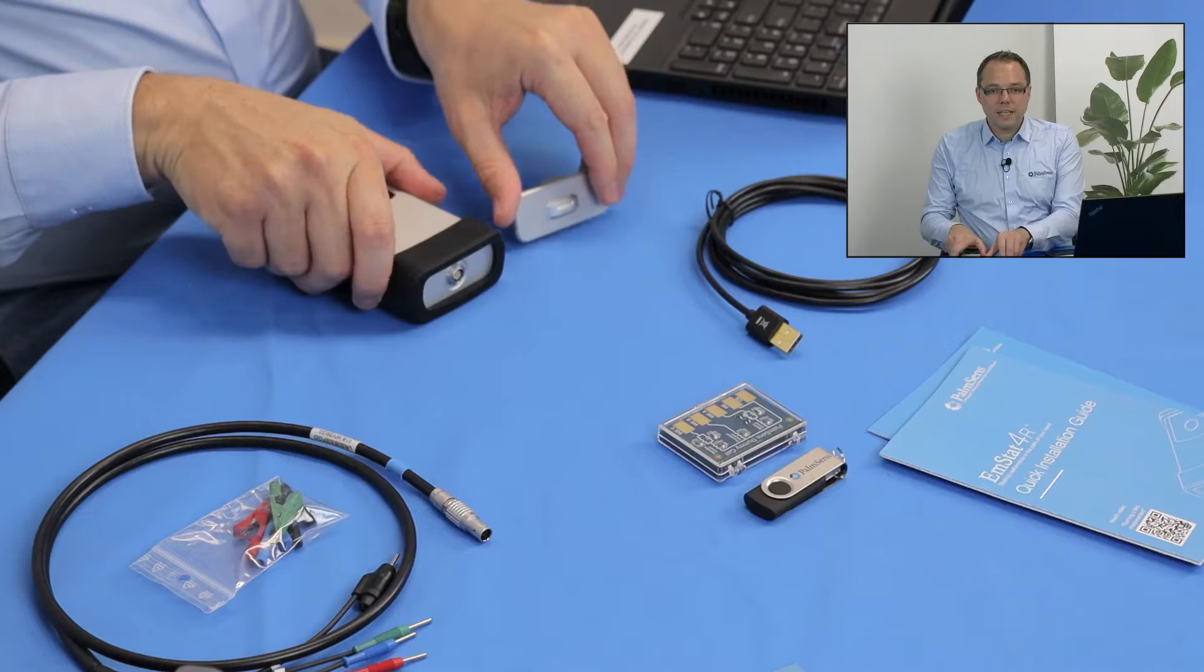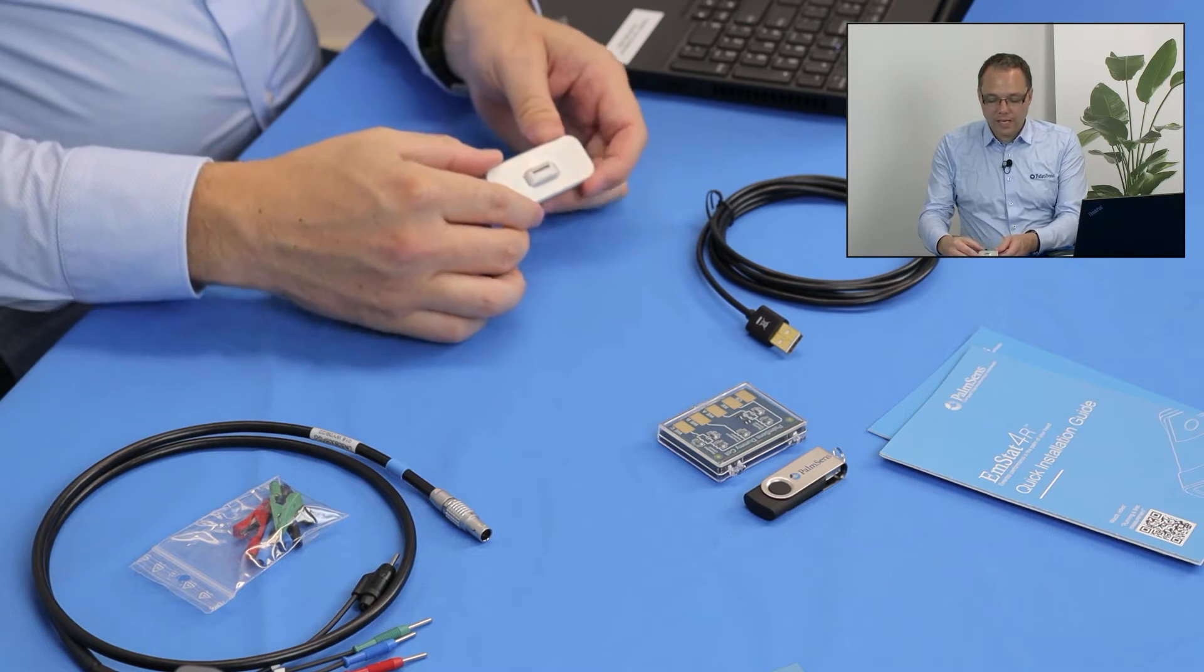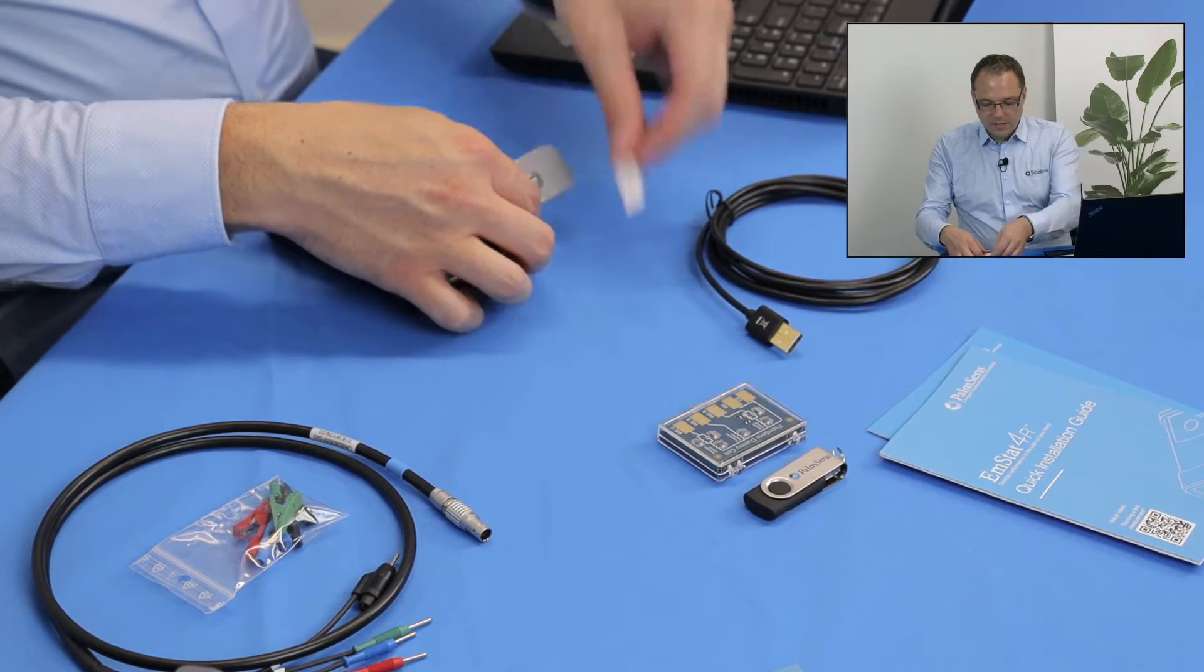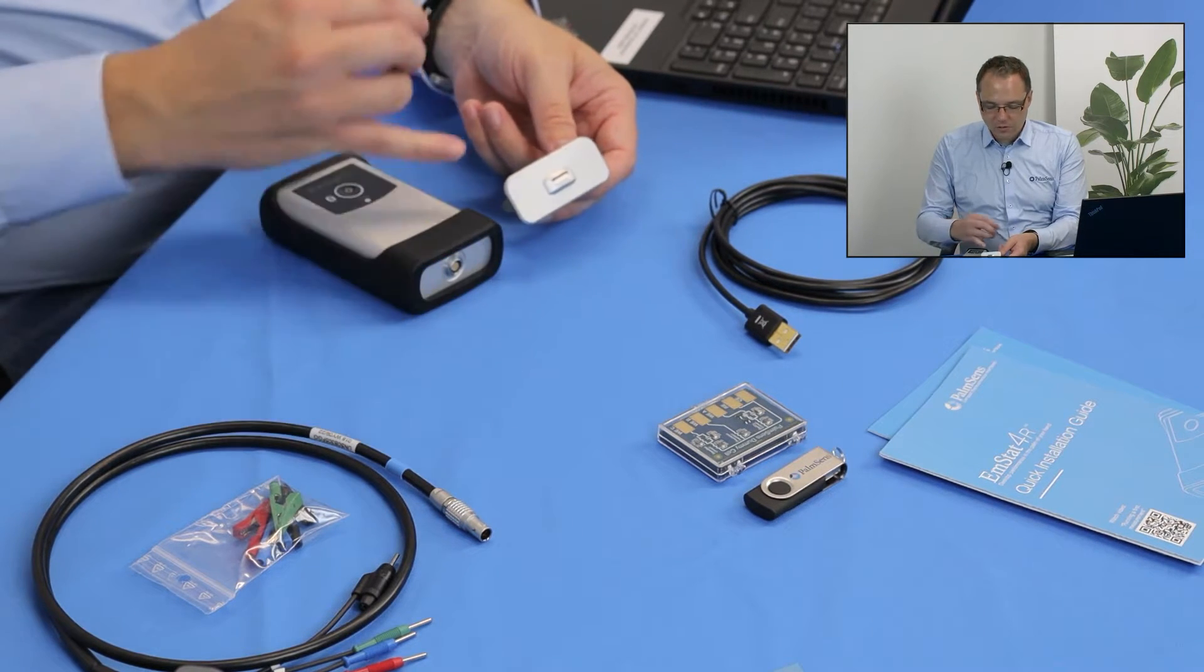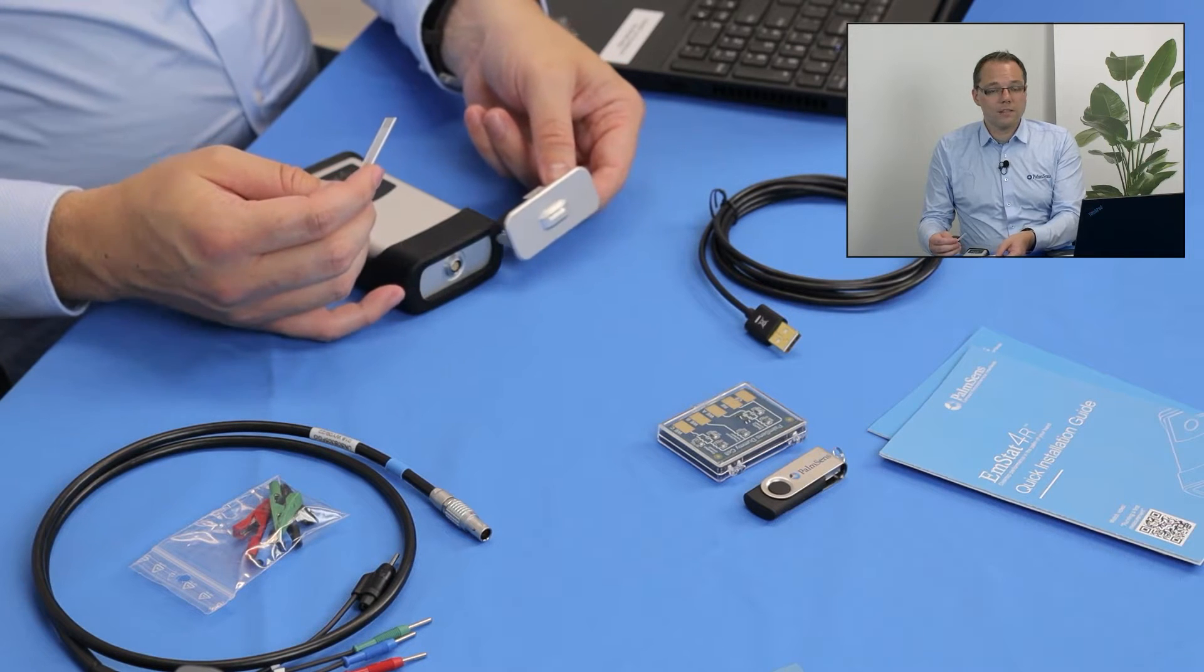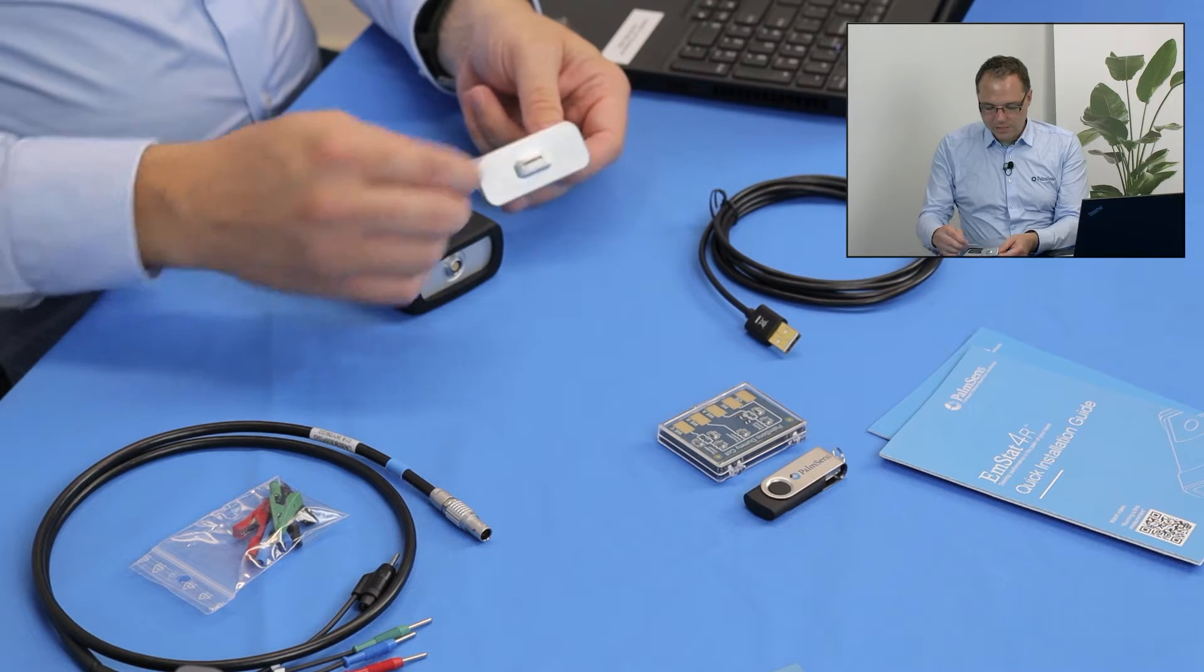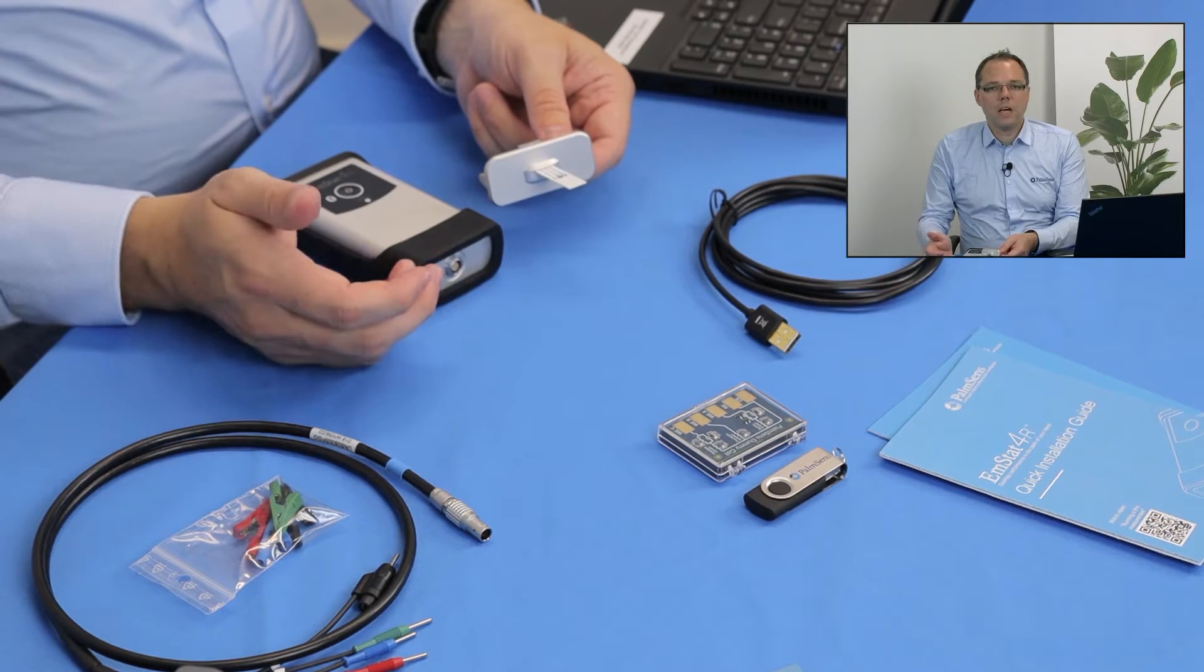So just before we start the measurement, I would like to show you an additional accessory you can get for the Emstat 4R. That is a front connector for screen printed electrodes like, for example, this one. When you want to use these type of electrodes, you can order this different front panel. You can even exchange the front panels yourself if you want to. And then you have in the front a connection for screen printed electrodes. You then just enter them into the instrument and there you go.